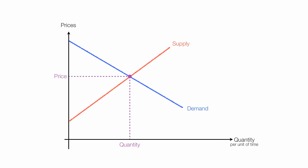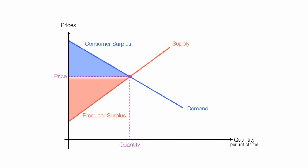Consumer surplus is the area below the demand curve and above price — it's this triangle right here. Producer surplus is the area above the supply curve and below price.